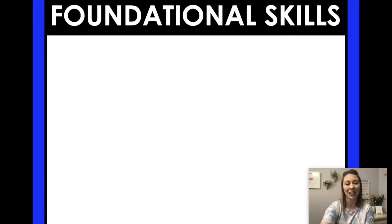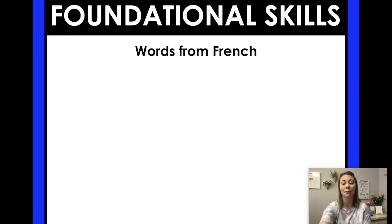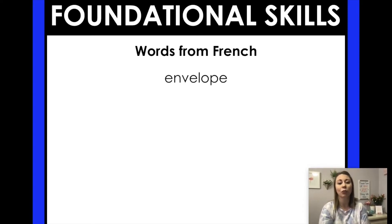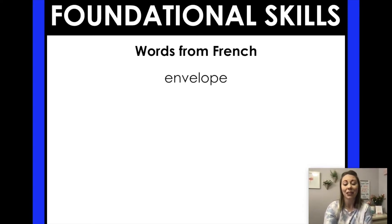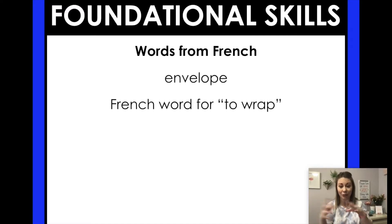Let's think about our foundational skills today. We're working on words from French. Some of our words in English actually come from the French language, like the word envelope. This word comes from French and it comes from the French word for 'to wrap.' So an envelope, when you put something in it, it's wrapping it up — and that's how we send our mail.